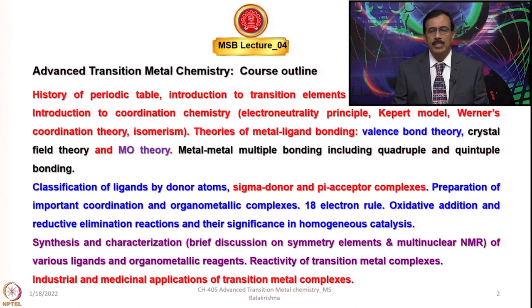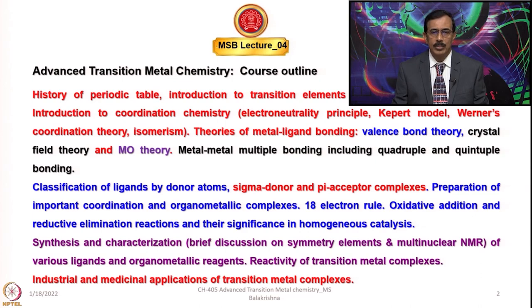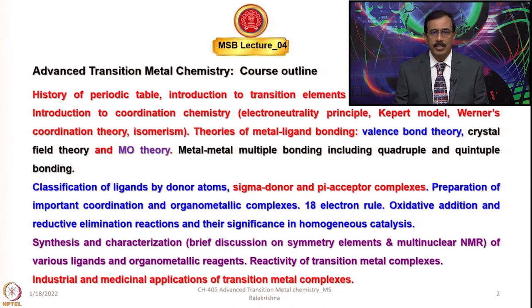I shall do the classification of ligands by donor atoms. There are several ways to do the classification, but the most appropriate and suitable method is classification of ligands by donor atoms, which can tell you about different types of ligands including sigma donors and pi acceptors, and the corresponding complexes. Preparation of important coordination and organometallic complexes is also included. I shall also tell you about the SIDWIC rule, the 18-electron rule, and the effective atomic number, and later discuss oxidative addition and reductive elimination reactions and their significance in homogeneous catalysis.